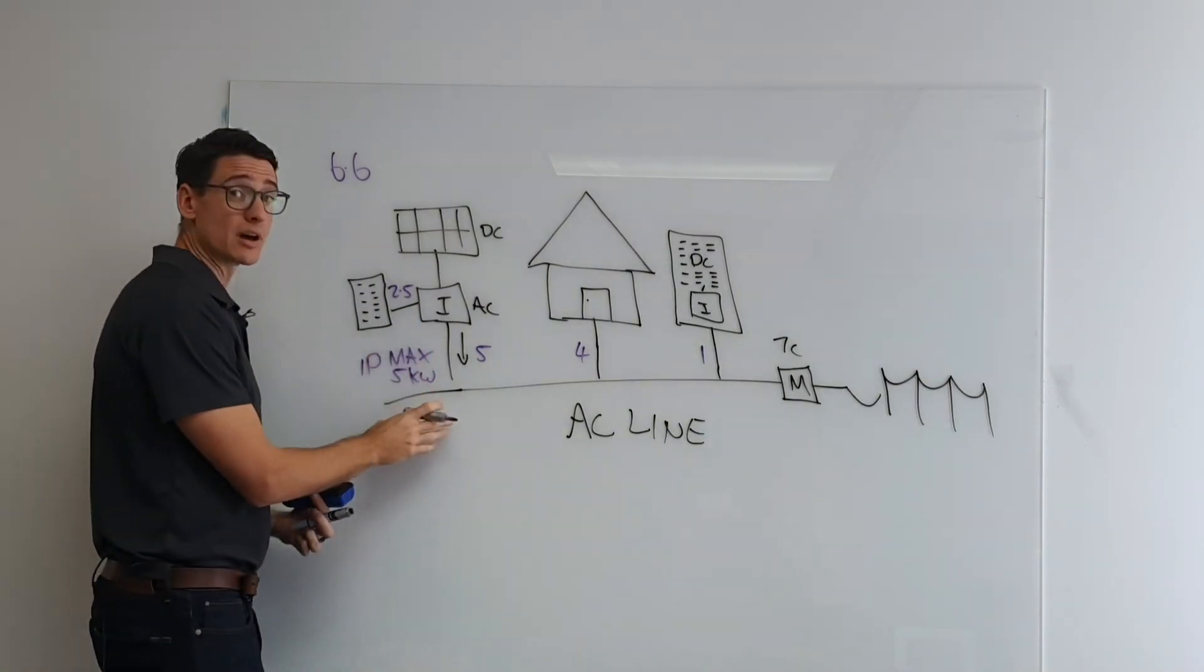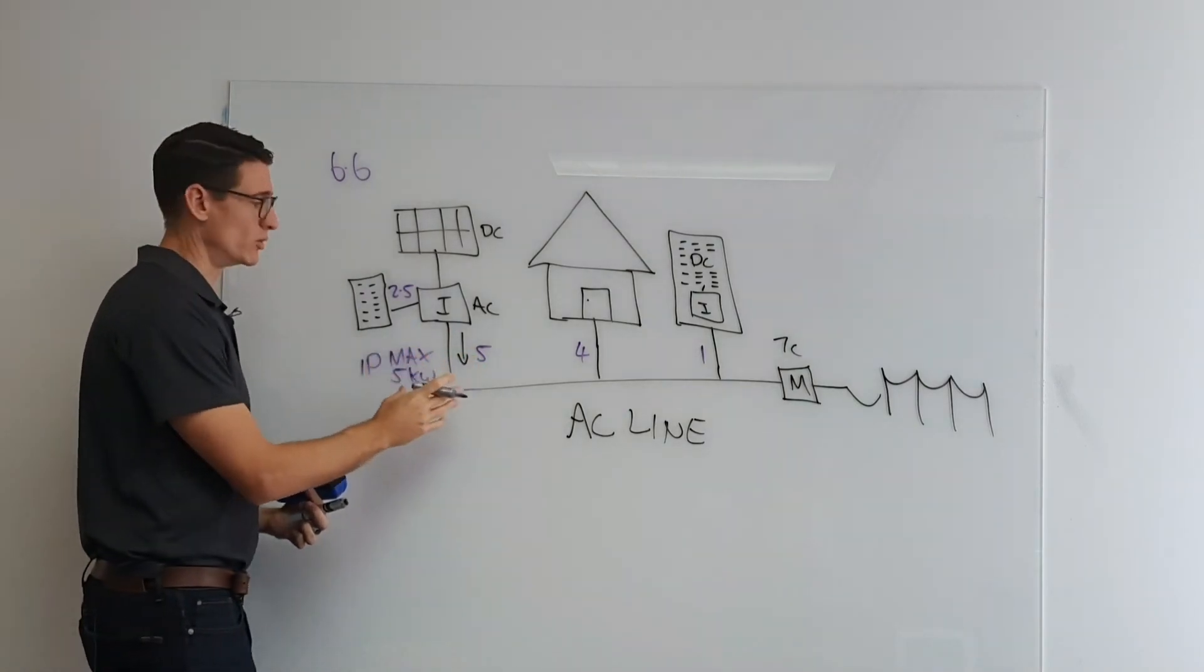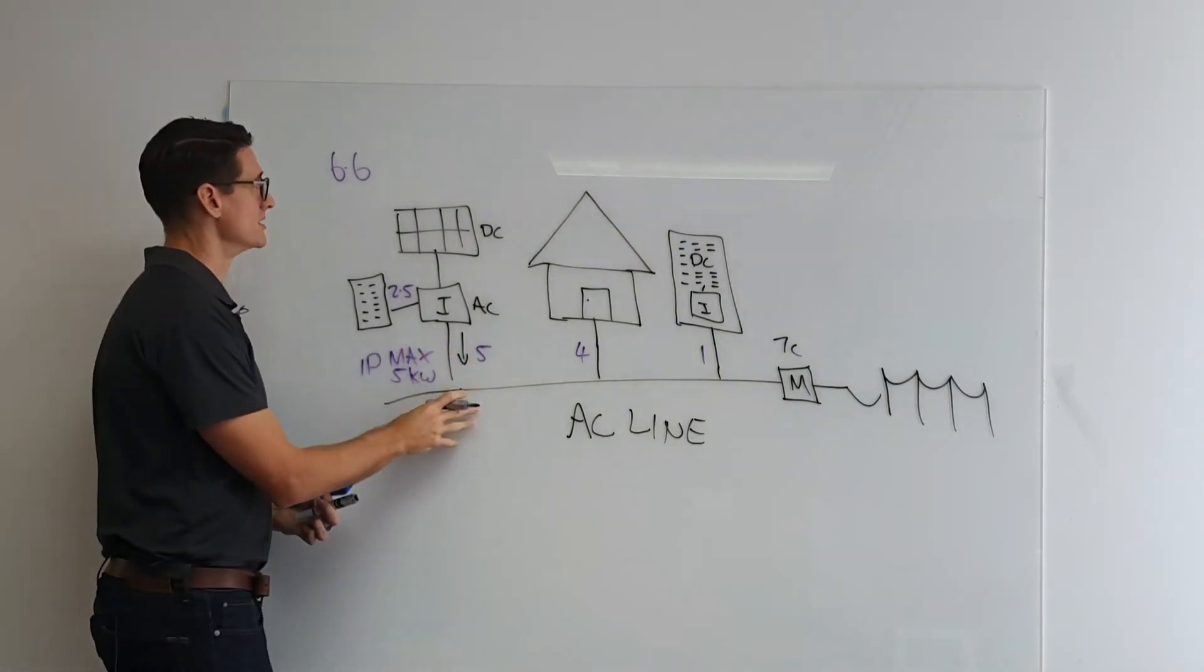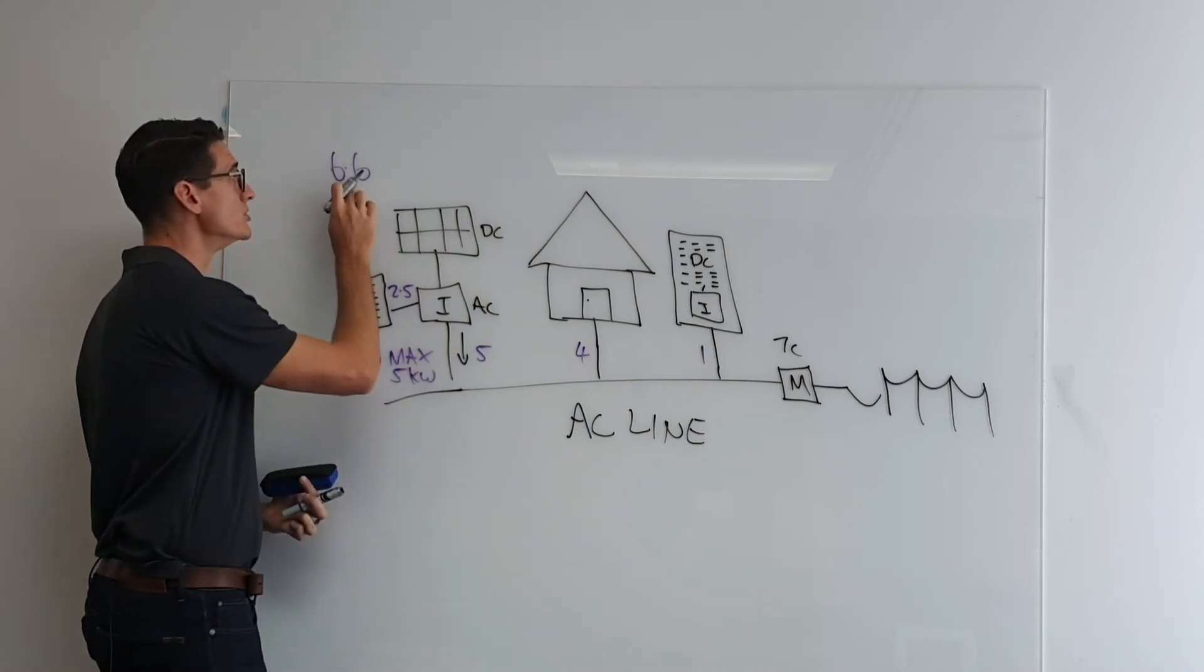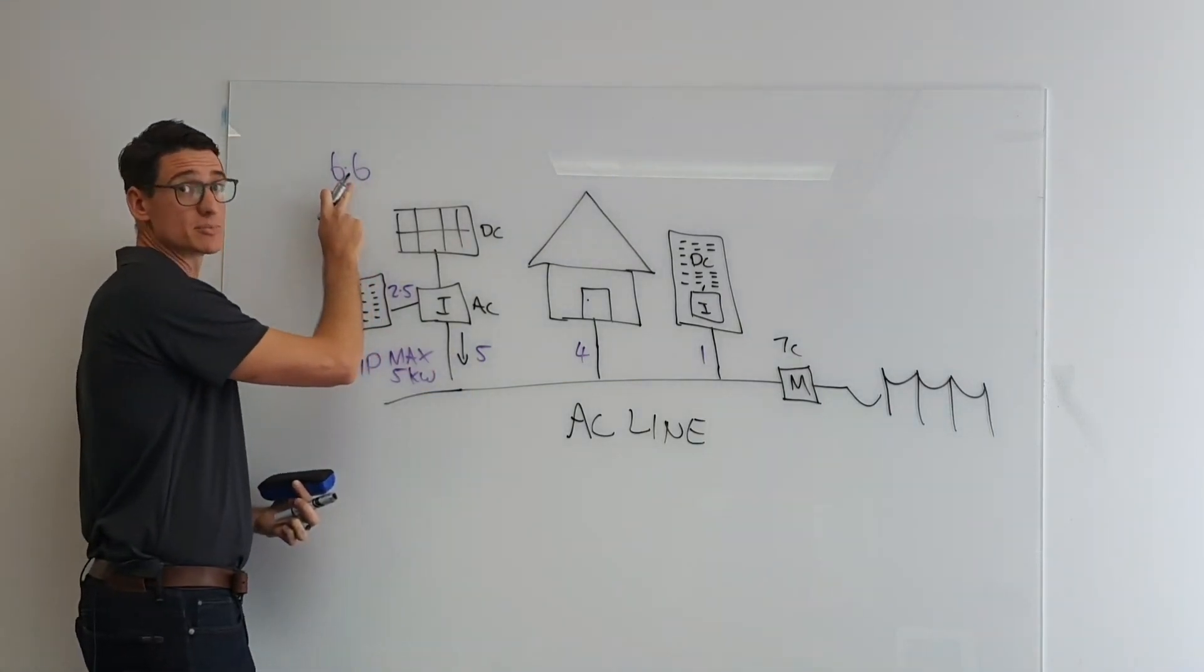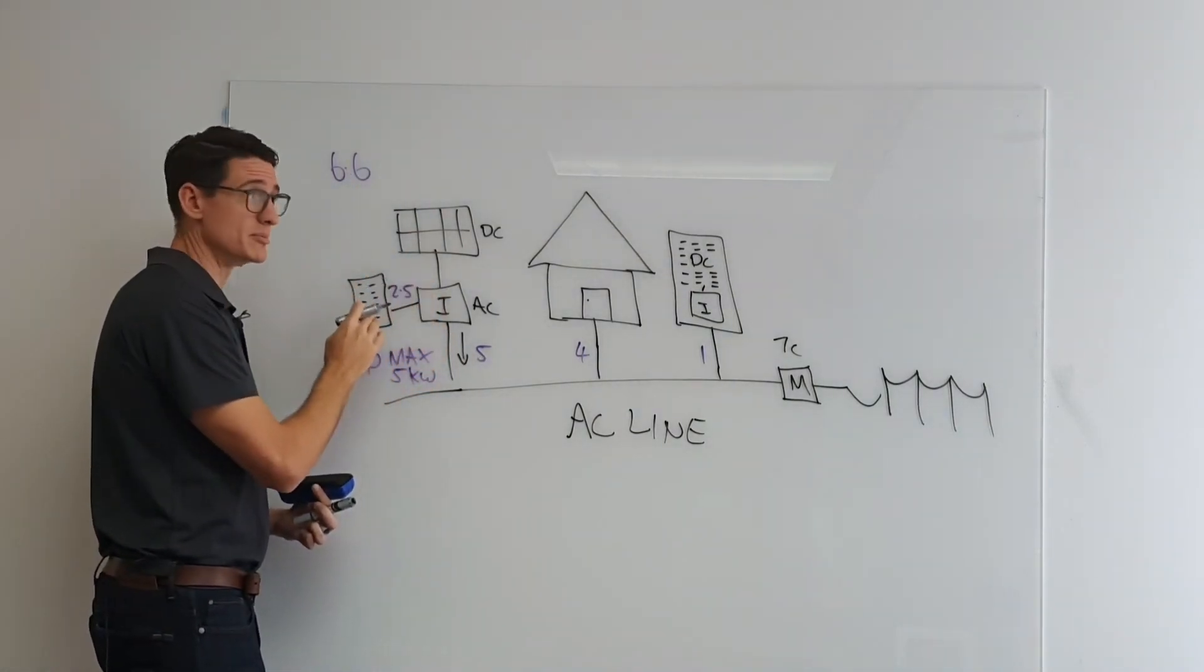With a hybrid type system, what you're actually allowed to do, and this is different, this is more around STC calculation, again, perhaps another video, is that you're actually allowed to install more than 6.6 kilowatts worth of panels on a 5 kilowatt inverter, if it is a hybrid, it has this DC charging capability.